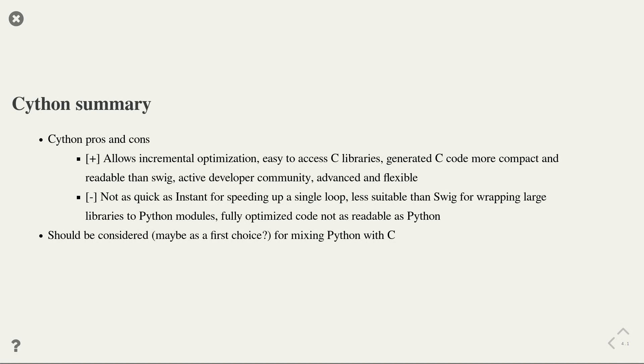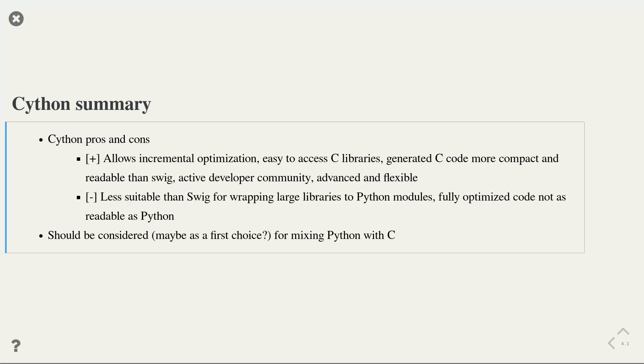Let's summarize the benefits and downsides of Cython. The benefit is that Cython allows you to start from an existing Python implementation and incrementally optimize the code. In addition, you can use Cython to access existing C libraries. Typically, the code generated by Cython is more compact and more readable than other solutions like SWIG. Cython also has an active developer community, advanced features, and is quite flexible. On the downside, Cython is often not as useful when you have a large existing library for which you want to develop a Python module. Also, fully optimized Cython code is typically not as readable as pure Python code. But overall, Cython should be considered as probably your first choice when you want to mix Python and C code.